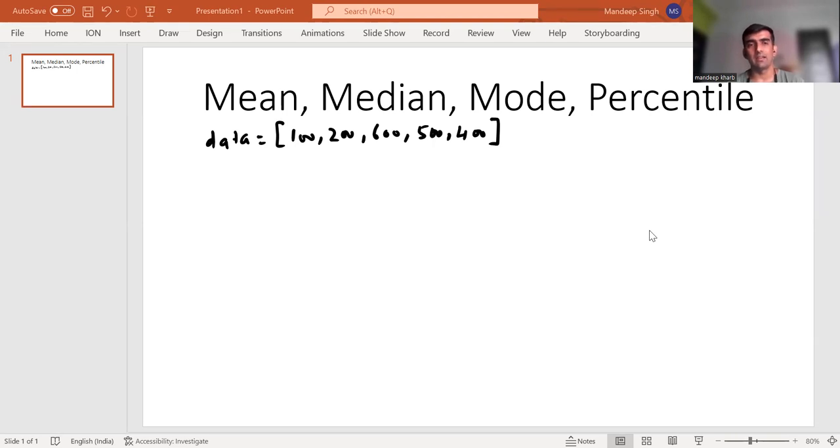You can see that I have taken a data list which basically has five numbers which are listed here. And we are going to do our calculation of mean, median, mode, and percentile for these data points. So let's get started. Very first, we are going to discuss about mean. So mean is basically the sum of the data points divided by the number of data points.